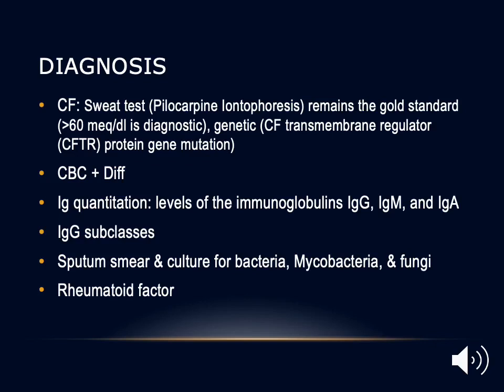Sometimes we order a CBC with differential looking for eosinophilia. IgG subclass testing helps in patients with normal total IgG but subclass deficiency. Sputum culture looking for bacteria, mycobacteria, or fungal infection may also assist. Remember that the presence of Aspergillus in ABPA is not an infection but helps in assessing the diagnosis. Rheumatoid factor may help in identifying underlying connective tissue disease such as rheumatoid arthritis.